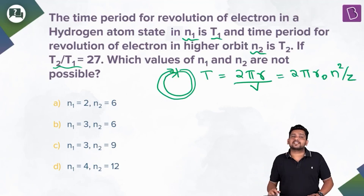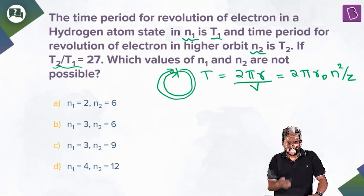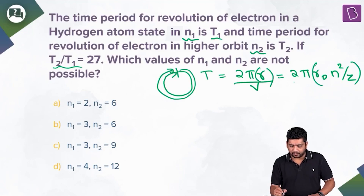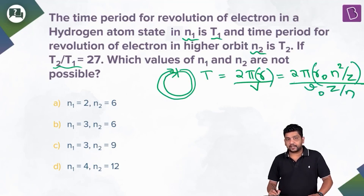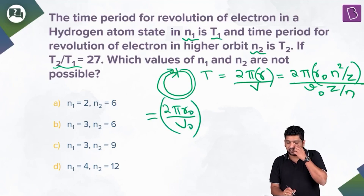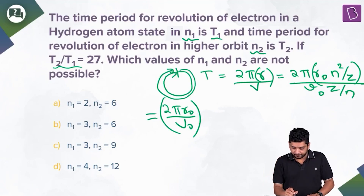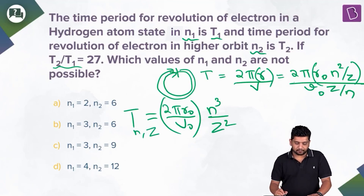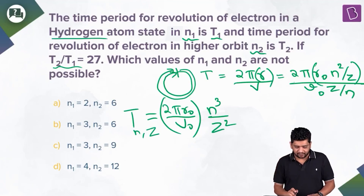The radius of the nth orbit is r = r₀n²/z, where r₀ = 0.529 Å, and the velocity is v = v₀z/n, where v₀ = 2.18×10⁶ m/s. Substituting, the time period becomes T = (2πr₀/v₀) × n³/z². This is the general expression for the time period in a hydrogen-like atom with atomic number z.